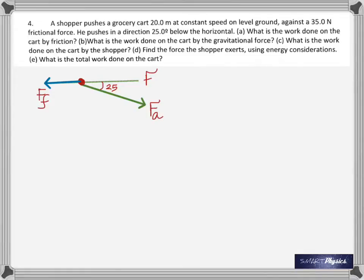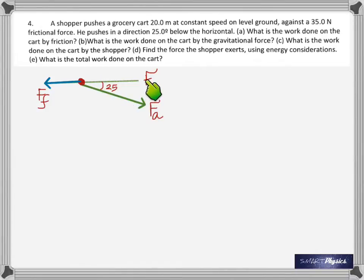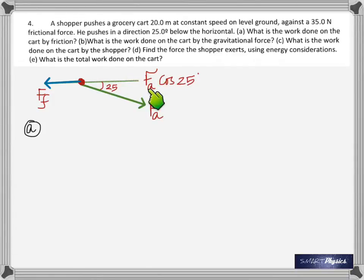The applied force is Fa. Looking at the right triangle, the adjacent side is always cosine, so the horizontal component is Fa·cos25°. That's the component along the direction of motion. He has to overcome friction, so now we know the work done.